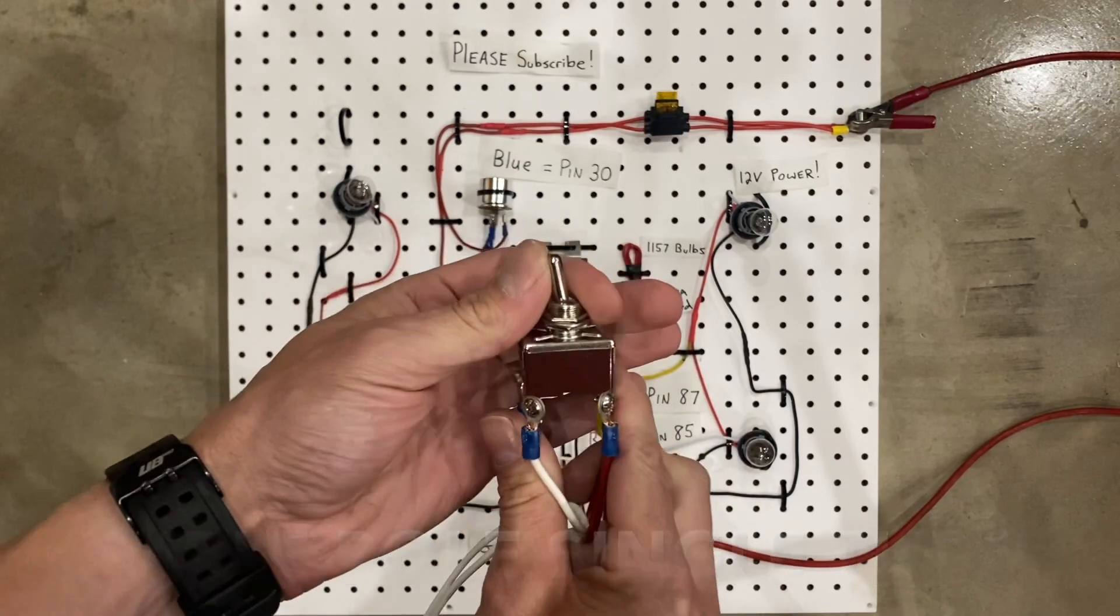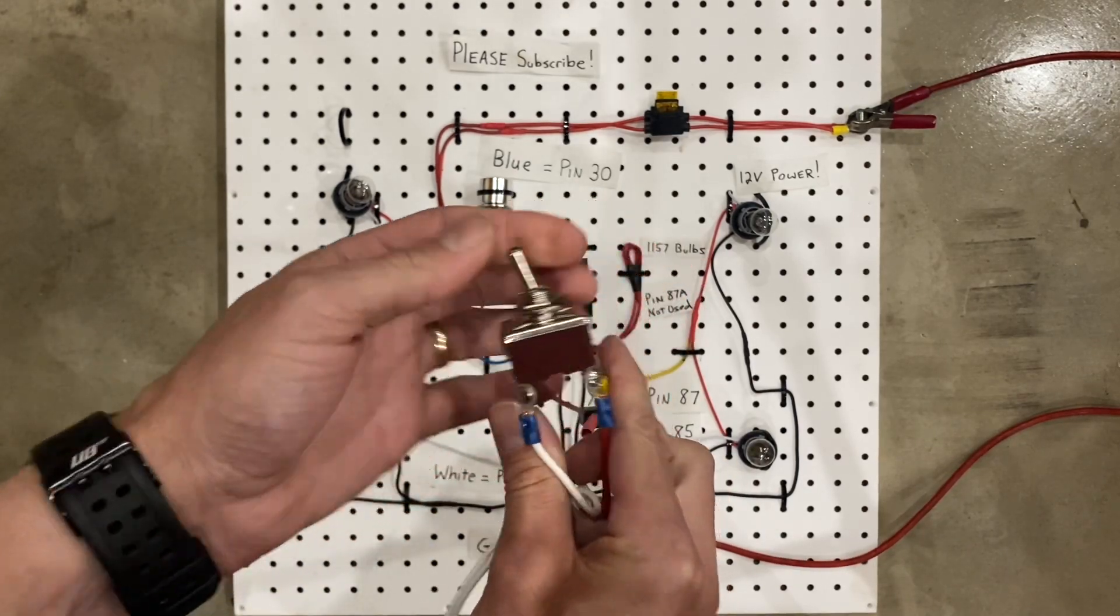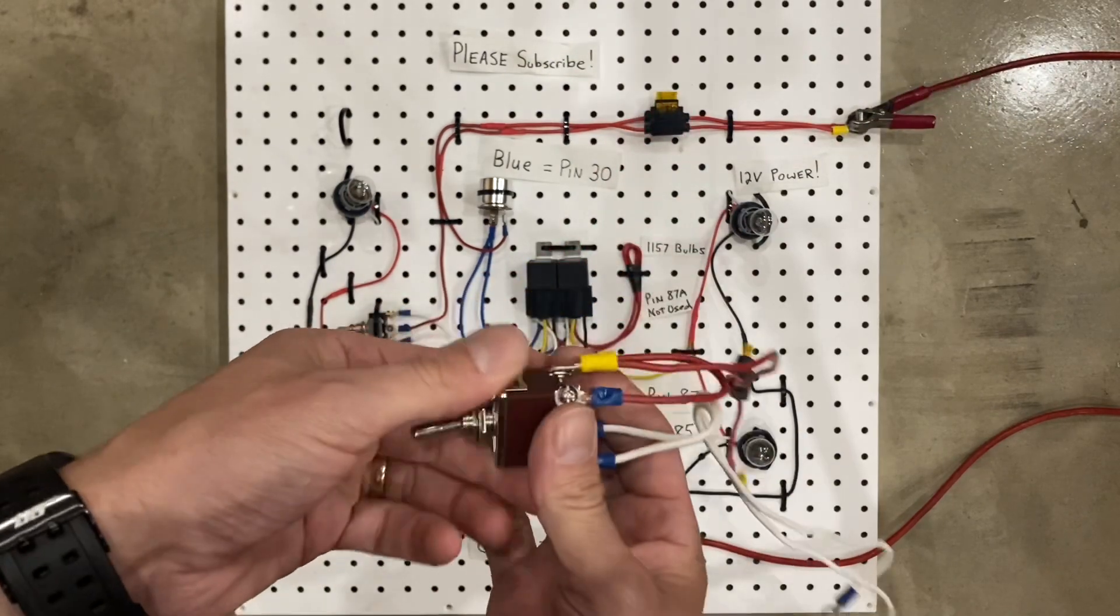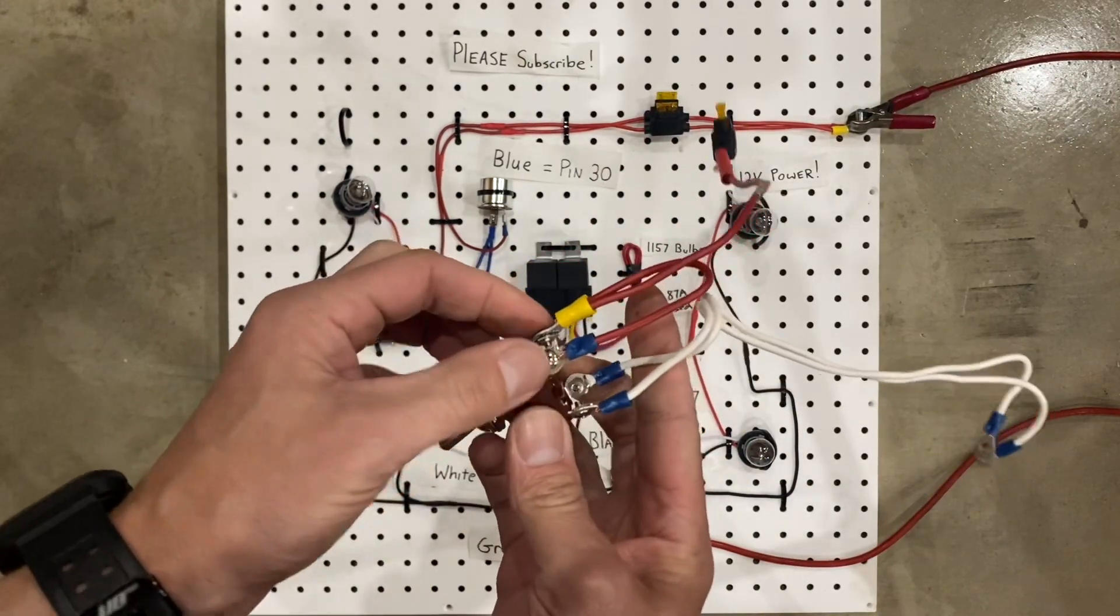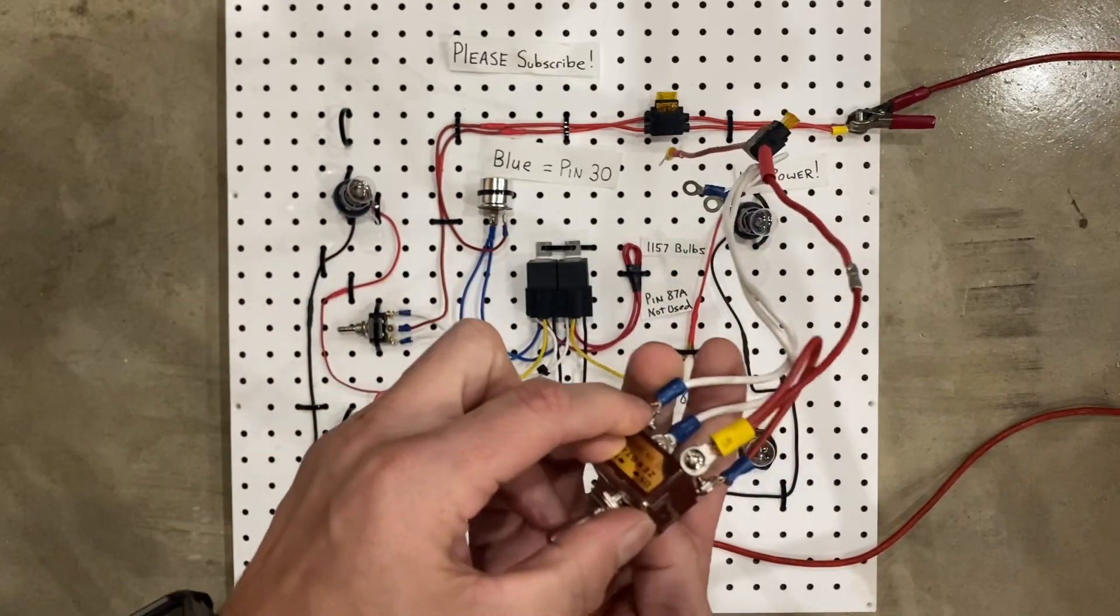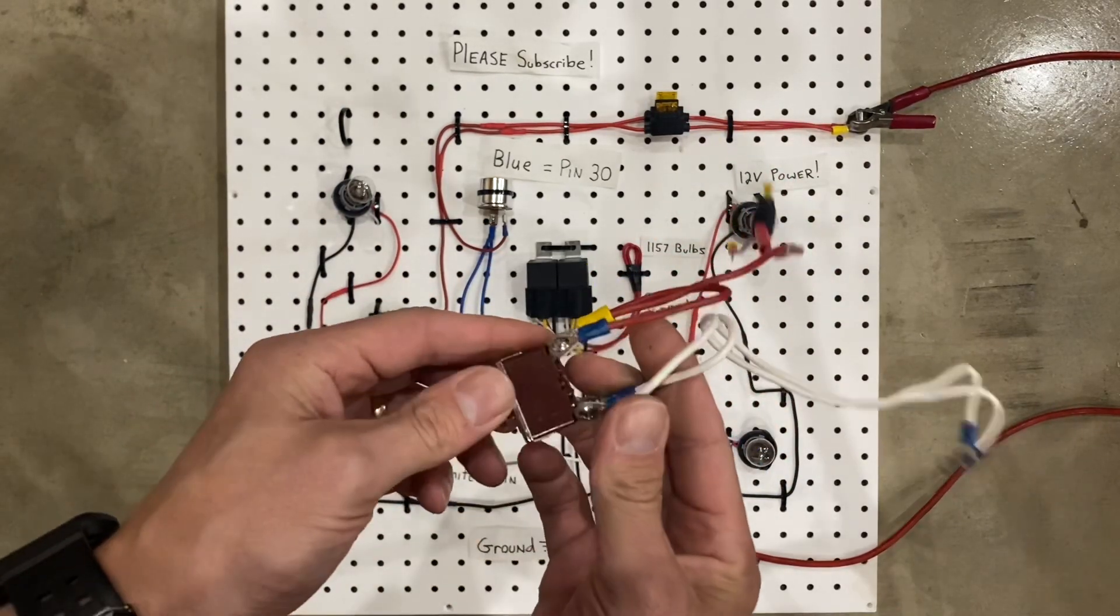Single-throw means it goes one way or the other. And then double-pole means it's like having two switches in one. So, although it's one switch that you flick, it's actually connecting this terminal to this, and this terminal to this. So, it's a pretty cool design of switch.